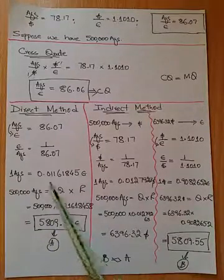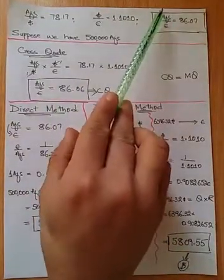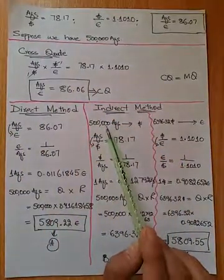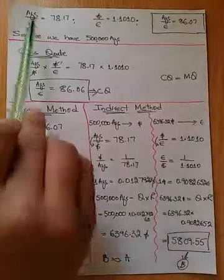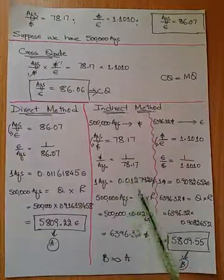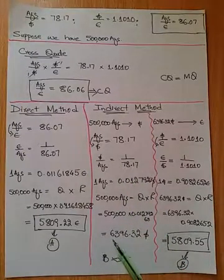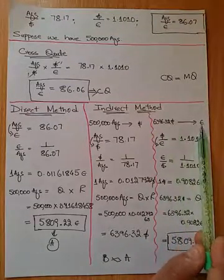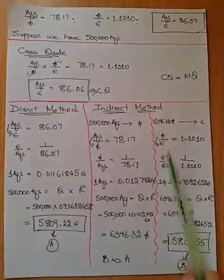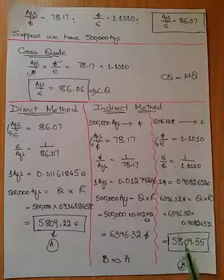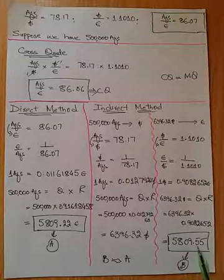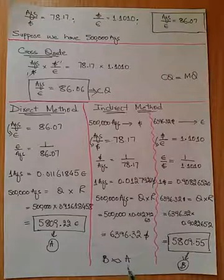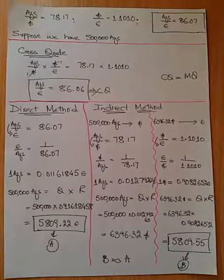For the indirect method, we first convert 500,000 CHF into dollars, then dollars into euros. For CHF to dollar, we used the exchange rate, applied the reversal and quantity-rate multiplication, and got 6,396.32 dollars. We then converted that to euro using the dollar-euro exchange rate with reversal, and got 5,809.55 euros. Comparing: indirect gives 5,809.55 and direct gives 5,809.22 — they are almost equal, so there is no significant arbitrage difference either way.